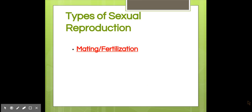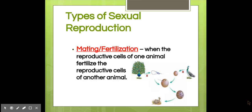The second type is mating and fertilization. This is when the reproductive cells of one animal fertilize the reproductive cells of another animal — think egg cells and sperm cells. The sperm cell fertilizes the egg cell, and it creates a baby or an embryo. And that's about it.